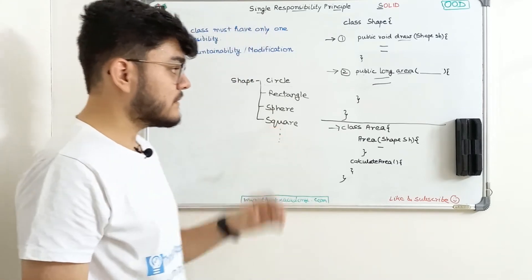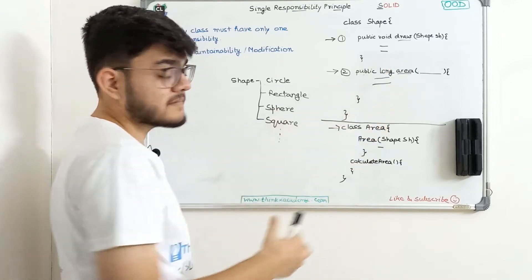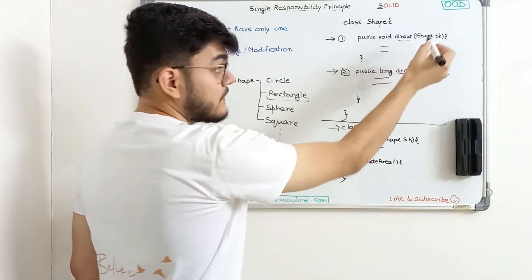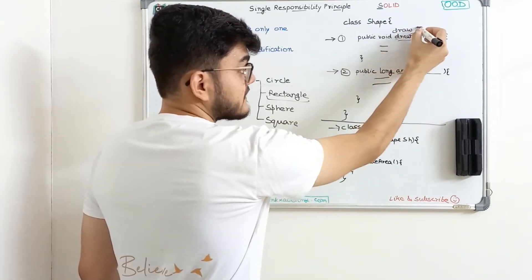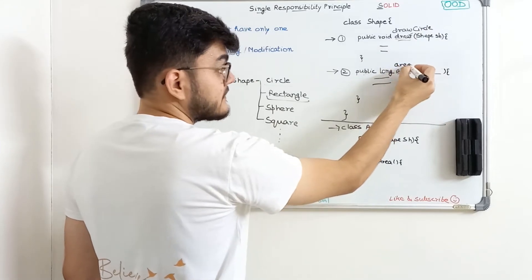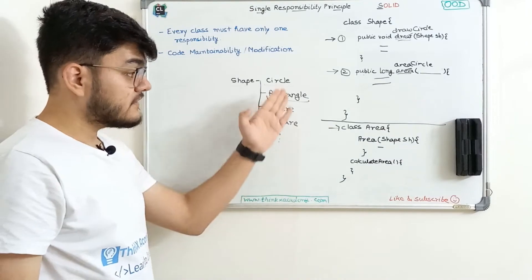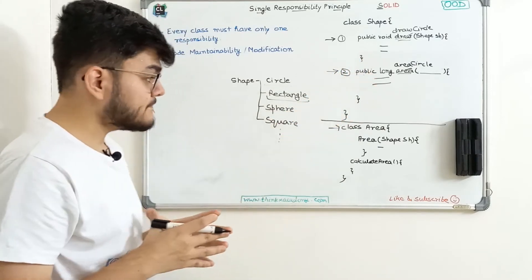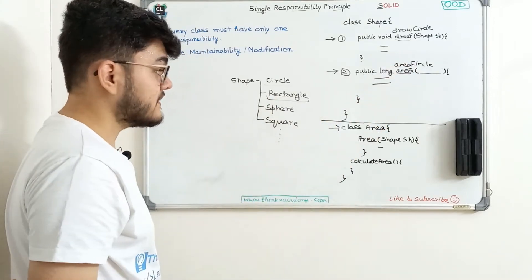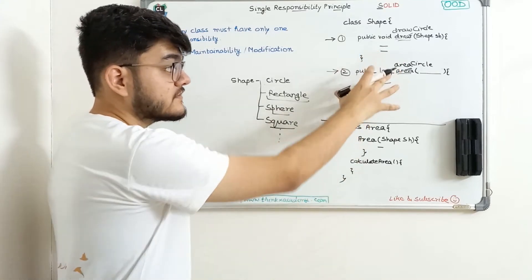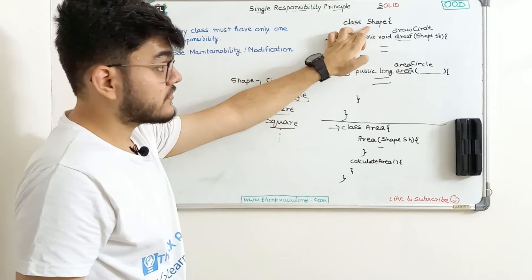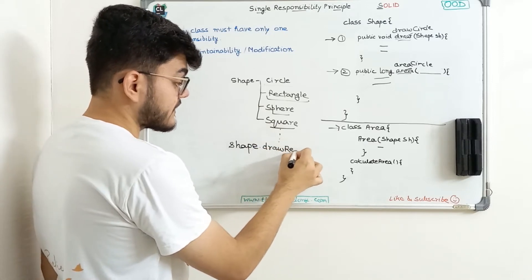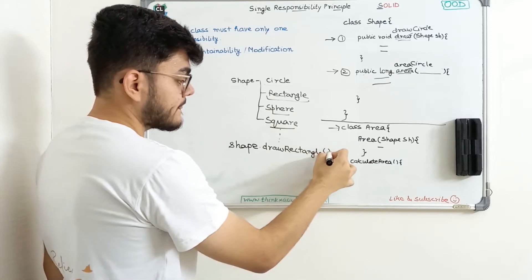To implement all these new shapes, we now need separate draw functions: a draw circle function, an area circle function, a draw rectangle function, a draw square function, and so on. We can add all these functions inside the Shape class, create an object of Shape, and invoke, say, the draw rectangle function to get the rectangle.